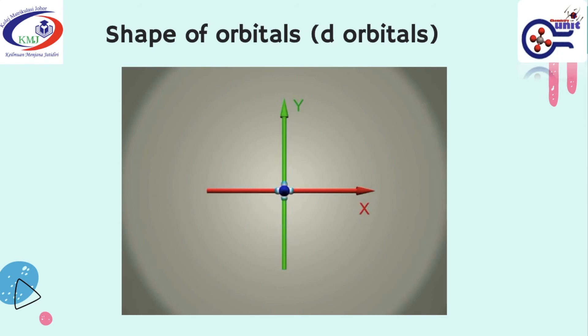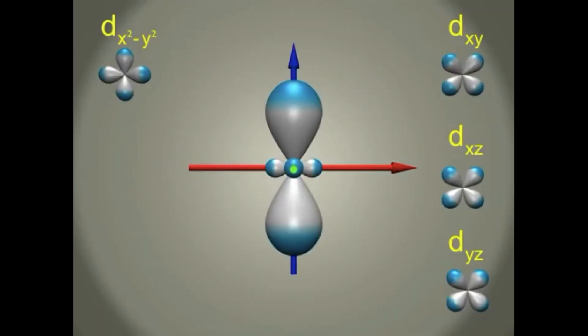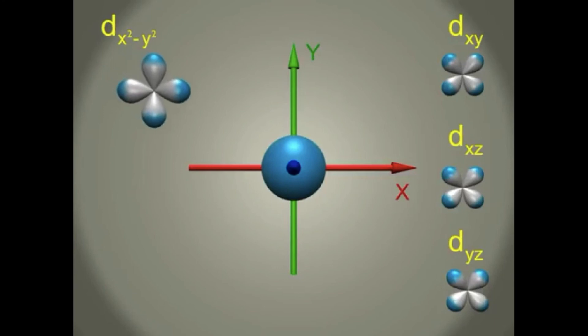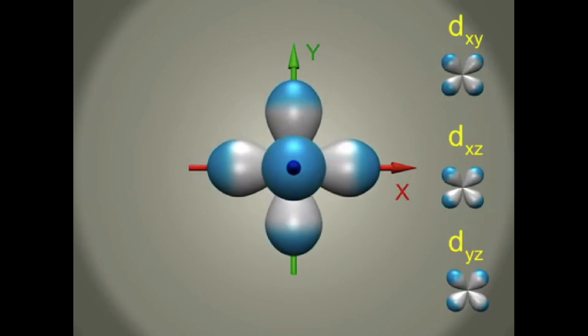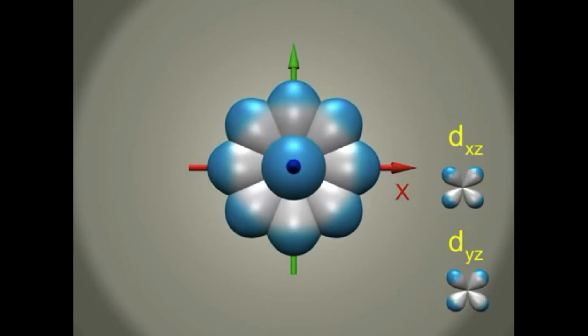This video is going to show you the shape of D-orbitals. The first one is D-Z-square. It's on the Z-axis. The second one is D-X-square-Y-square. It's on the X-axis and Y-axis. The third one is D-X-Y. It is because the orbital is in between the X-axis and Y-axis.